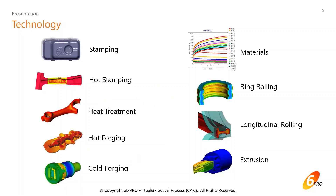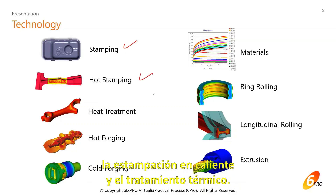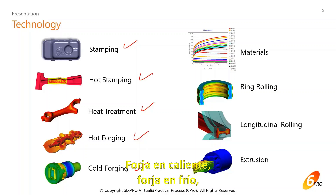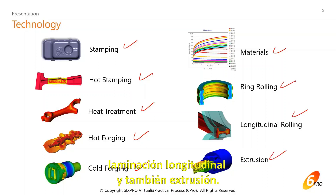The main processes we approach are stamping, hot stamping, heat treatment, hot forging, cold forging, materials prediction, ring rolling, longitudinal rolling, and also extrusion.